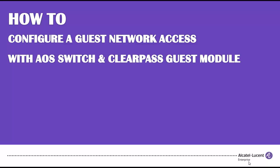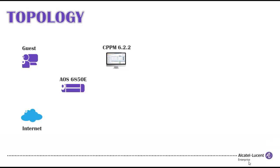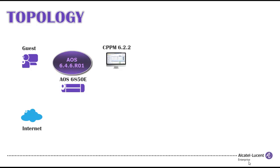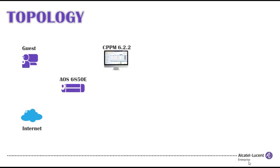In this video demonstration, we will show you the steps to configure a wired network to handle guest network access service using ClearPass Guest Module and Alcatel-Lucent Switch. In this network topology, we will need a Windows PC for guest user, an Alcatel-Lucent 6850E running software version 6.4.6 R01, acting as an authenticator switch, and a CPPM authentication server with ClearPass Guest Module.